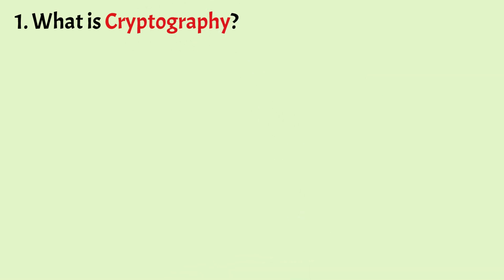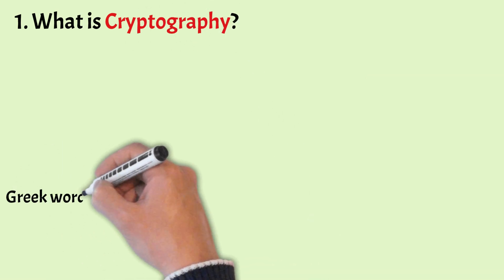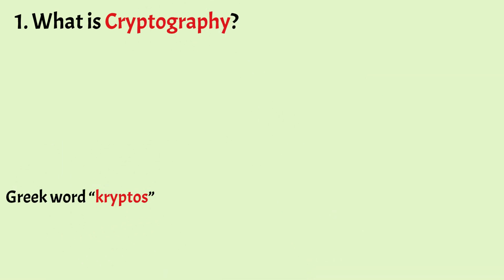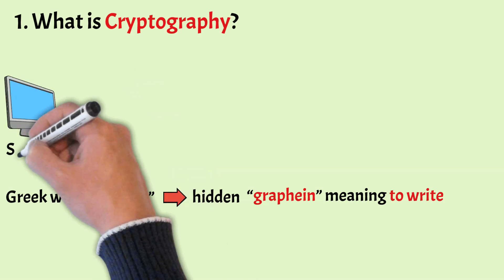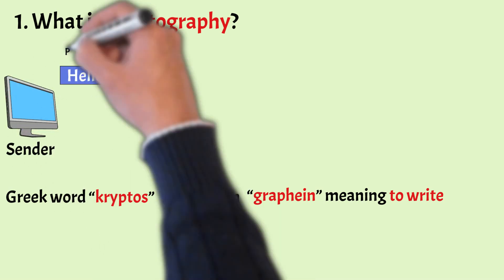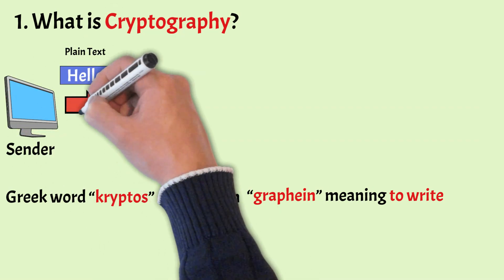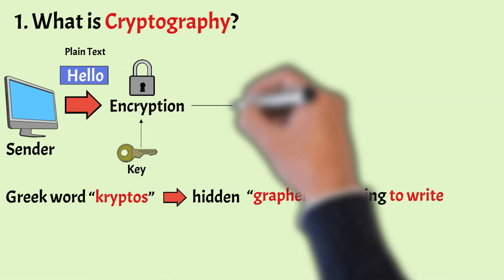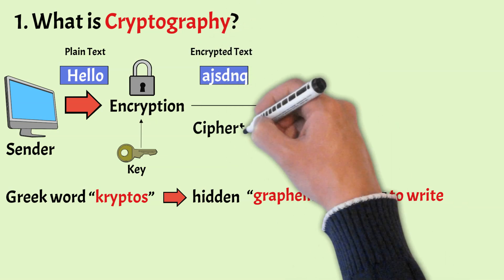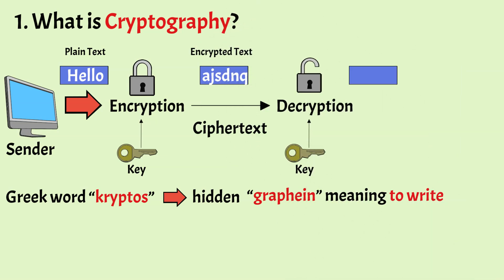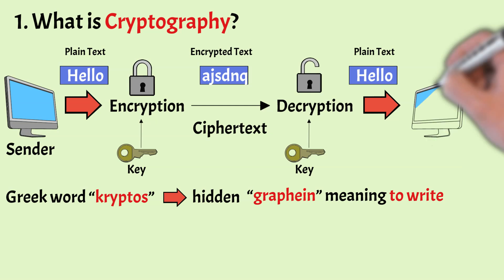What is cryptography? Cryptography is derived from the Greek word 'cryptos' which means hidden, and 'graphene' meaning to write. Cryptography is the study of techniques to establish secured communication so that only the person for whom the content is intended can view and process.